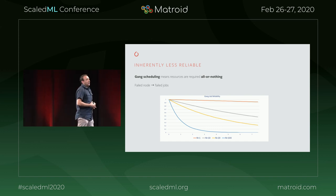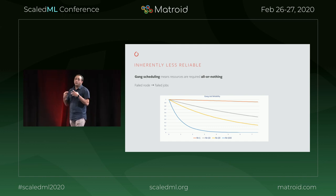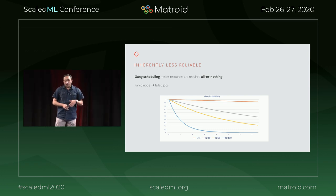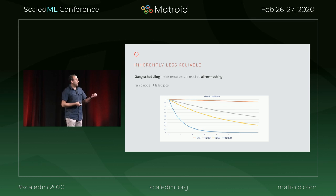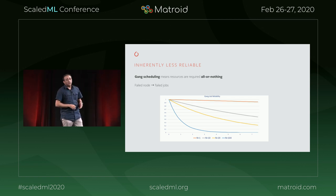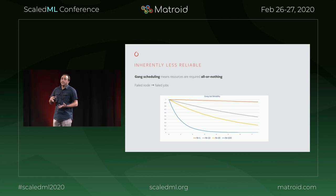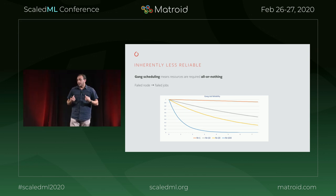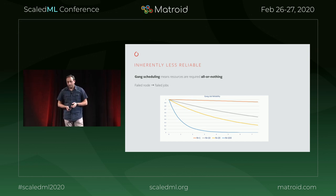When you look closely at how we schedule these jobs and run large-scale distributed training, you find that gang scheduling — the ability to schedule things together so your model can converge — is essential. It's all or nothing: one failed node in your training job will render the whole job a failure. This graph shows the relationship between probability of failure and different gang sizes as time progresses. You can see that the probability of failure increases significantly as the gang size increases. A typical training job at Facebook is on the order of 100 nodes, meaning probability of failure from even a single node failure becomes very high.